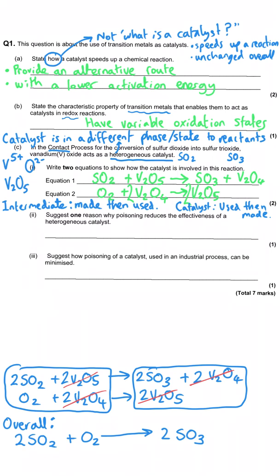The question goes on to ask about poisoning — a particular effect that can happen to a heterogeneous catalyst during use. To understand poisoning, it's useful to have an overview of what happens in heterogeneous catalysis generally.